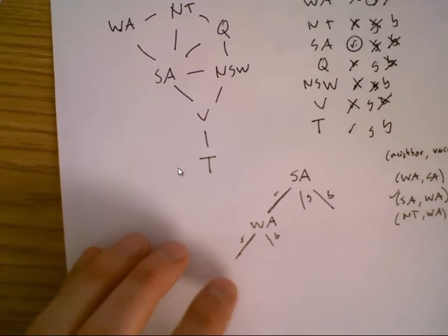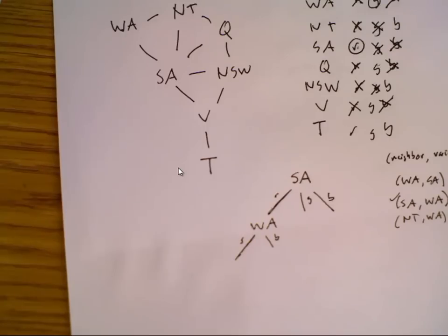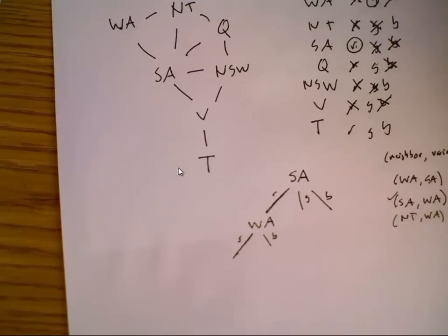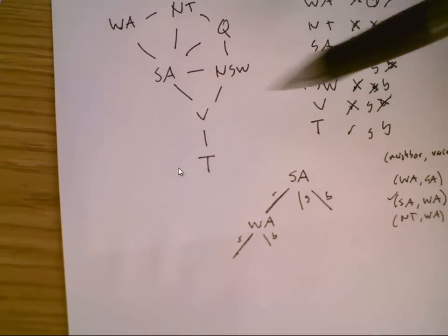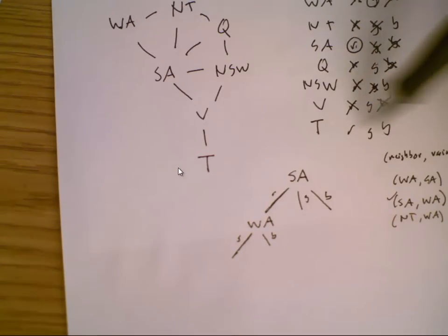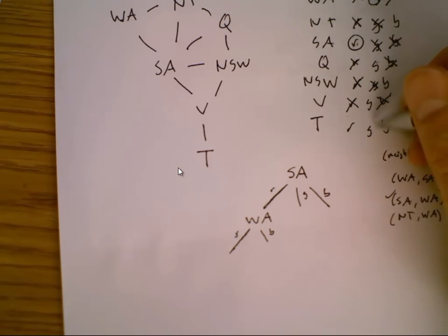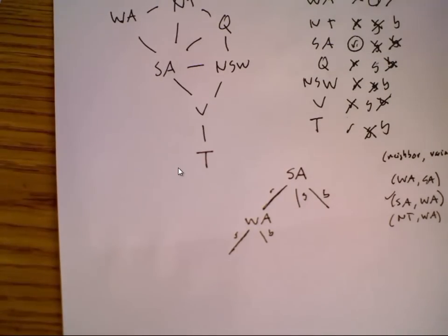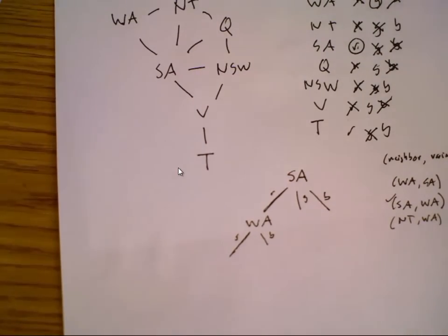Forward-checking cuts down on the amount of search quite a bit too, but MAC is more powerful. In fact, for some problems you can run MAC at the root — even before you set anything, just push all the arcs onto the queue and check all the arcs. Sometimes, if the constraints are tight in one area, constraint propagation can solve the whole problem because it cascades outward. It's a very powerful technique. For Tasmania, green would have been eliminated, so there are just two options and they both work — no search, no backtracking at all.